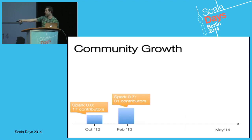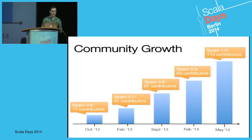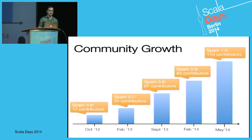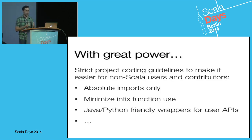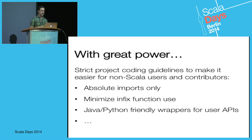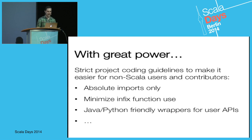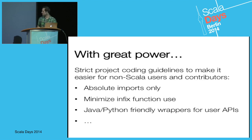A word of caution: with the great power of Scala, it's easy to alienate users and developers if you're not careful. The Spark project has very strict coding guidelines that try to keep the system approachable from both user and contributor standpoints, even for people just starting to learn Scala. For example, we disallow relative imports, minimize infix function use, and we're quite militant about creating Java and Python wrappers for all our APIs — nobody should ever have to use 'module dollar sign' from Java.